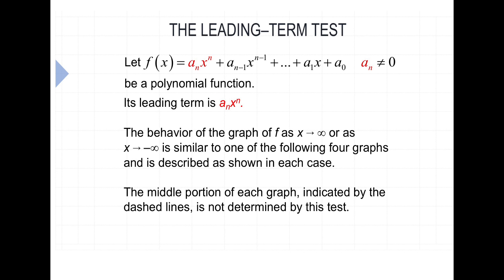Given any polynomial of degree n, the behavior of the graph as x approaches positive or negative infinity should be similar to one of the four cases we looked at: even/odd degree with positive or negative leading coefficient a. The middle portion of the graph is not determined by this test — there are many variables as to what happens in the middle — but overall you're going to see that similarity in end behavior.